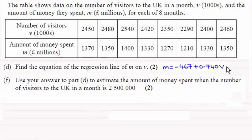So it's just a question of substituting our value for V into this regression line, but we've got to take a bit of care because remember V is given in thousands. So therefore if we've got this value, we need to divide it by a thousand, and if we do that it will be when V equals 2,500.